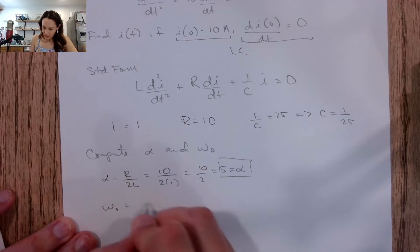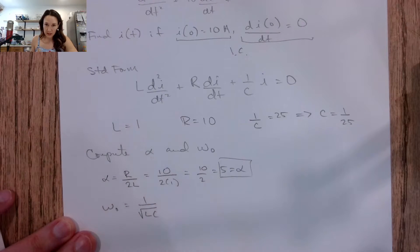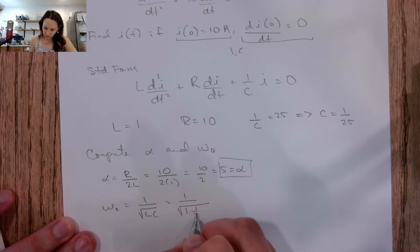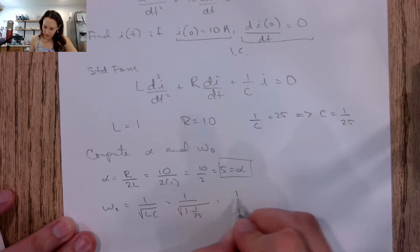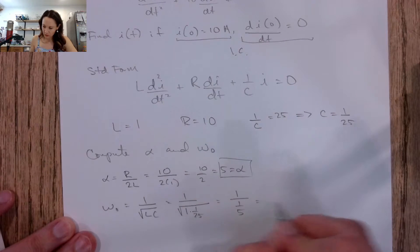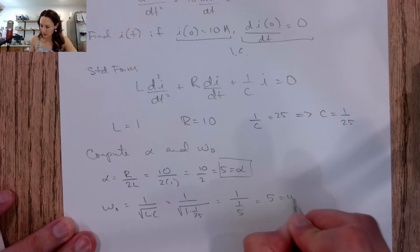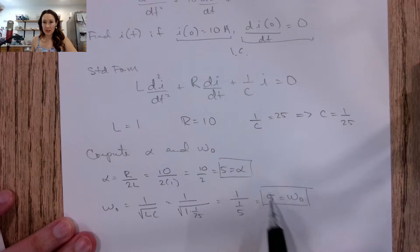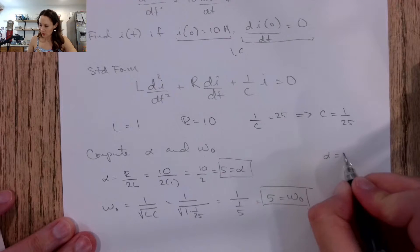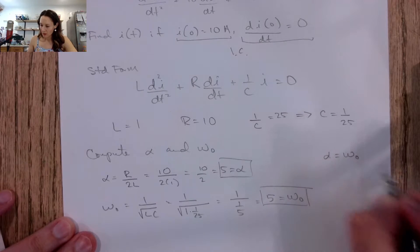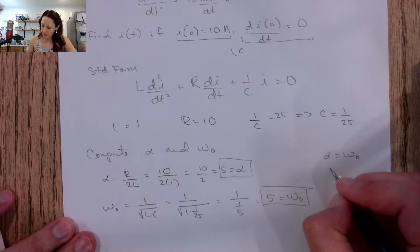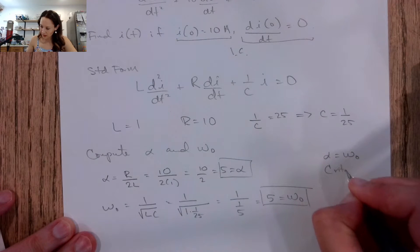Omega naught is 1 over the square root of LC. For this example, that's the square root of 1 times 1/25, which is 1 over 1/5, giving omega naught = 5. Now I see that alpha equals omega naught, so this is going to be the critically damped case.